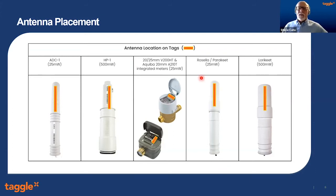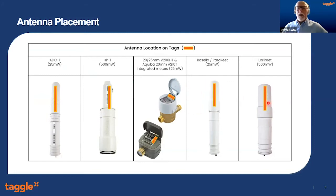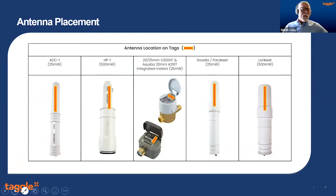We have two types of integrated Tagle radio meters: the Honeywell V200 HT in 20 and 25mm, and the Akiba mag flow meter in 20mm. Both have a different shaped antenna sitting at the top or near the register. Coming up soon, our Rosella, Parakeet, and Lorikeet will replace the ADCs and AHPs — still with the Byron radio, still with the antenna in pretty much the same spot, but with a lot more smarts on board.